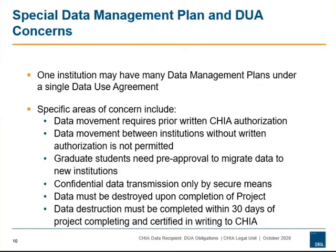The security and integrity of CHIA data is protected by the representations made in the approved data management plan, or DMP, provided by the institution receiving CHIA data. Under a single data use agreement, there may be only one data management plan or there may be multiple project-specific data management plans. The data management plan describes how the institution will hold CHIA data. The DUA requires that CHIA data not be moved to a different location, server, or environment within an institution than is specified in the data management plan without first receiving CHIA approval. Similarly, data may not be moved from one institution to another without prior CHIA written approval, which would include a replacement data management plan. This is a known risk that should be attended to in all cases, but particularly those involving research conducted by graduate students who may change academic institutions.